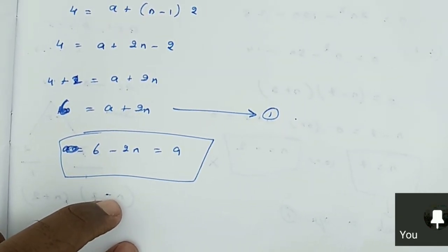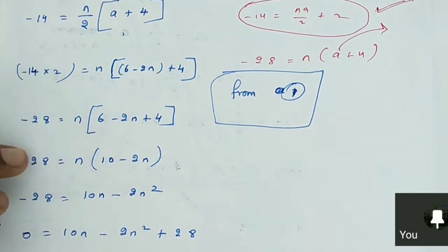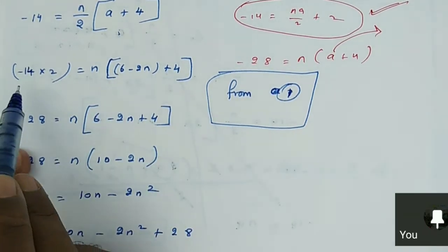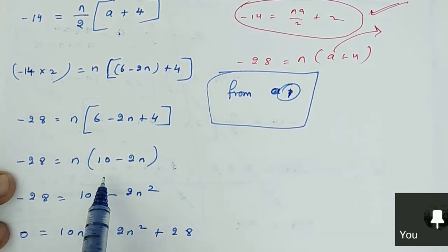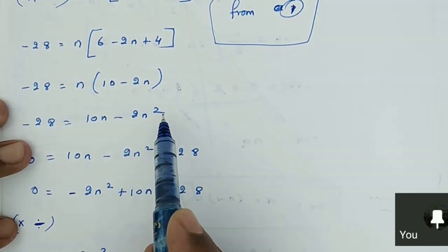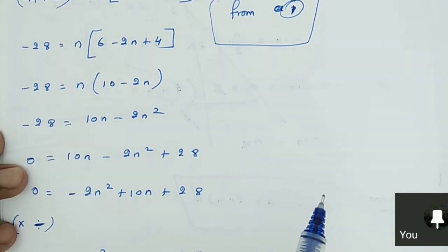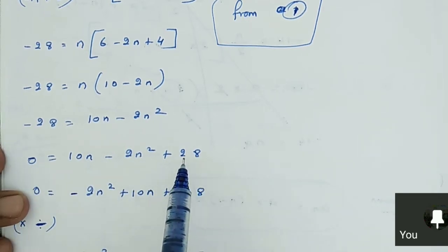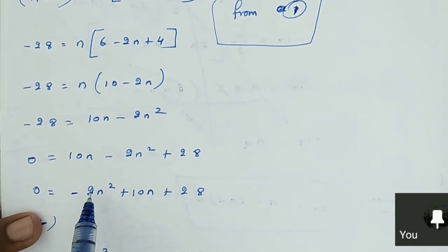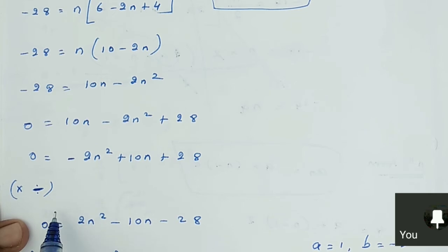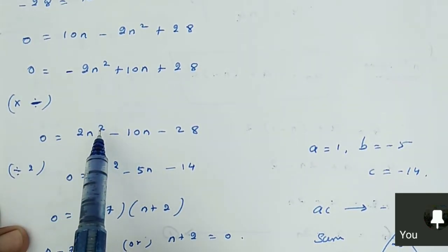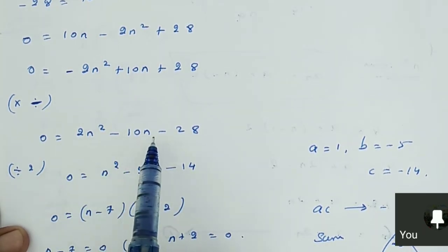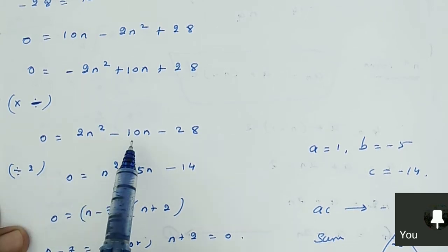Now in the A value, you can substitute it here. N into A value: 6 minus 2N plus 4. Then 14 into 2 — minus 28 is equal to N into 6 minus 2N plus 4. Then 6 plus 4 is 10. So minus 28 equals 10N minus 2N squared. Transposing all terms to the right: 0 equals 2N squared minus 10N minus 28. Then dividing by 2: 0 equals N squared minus 5N minus 14.